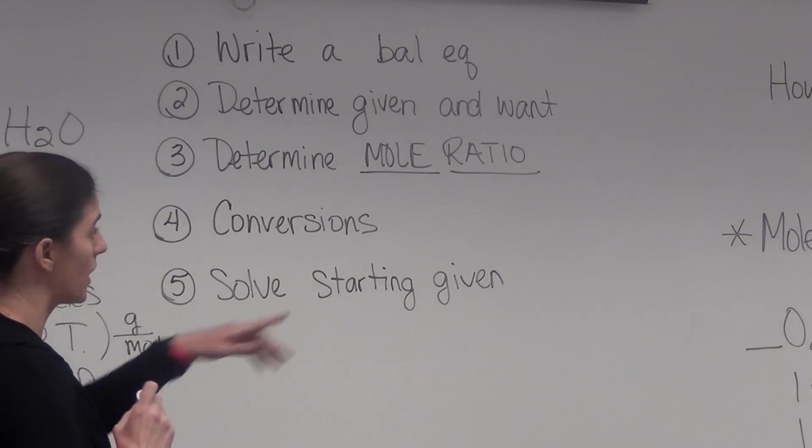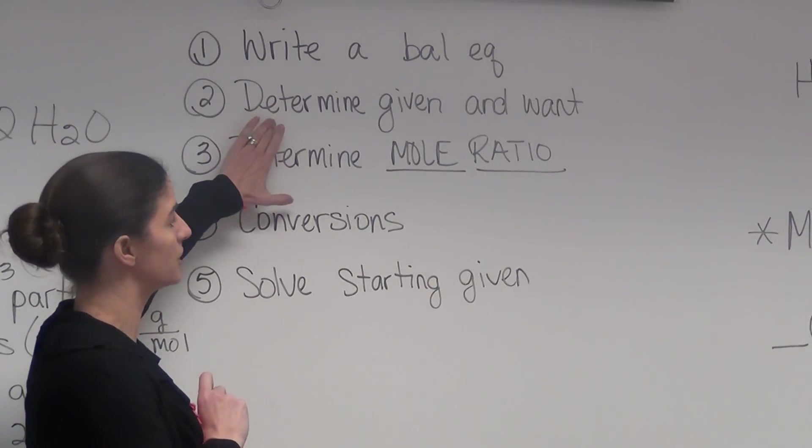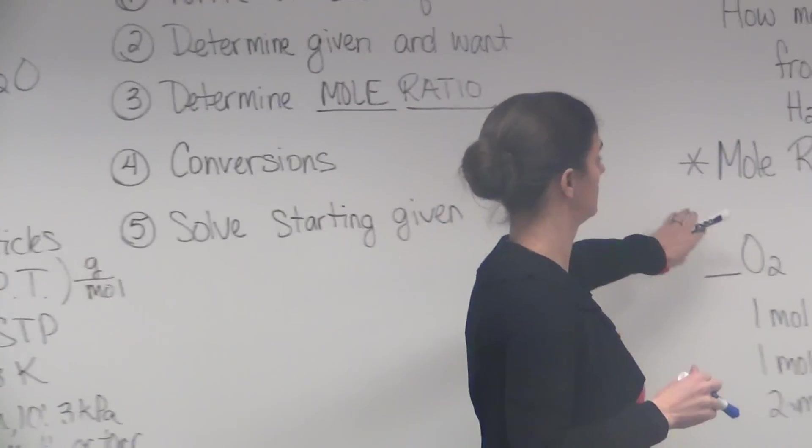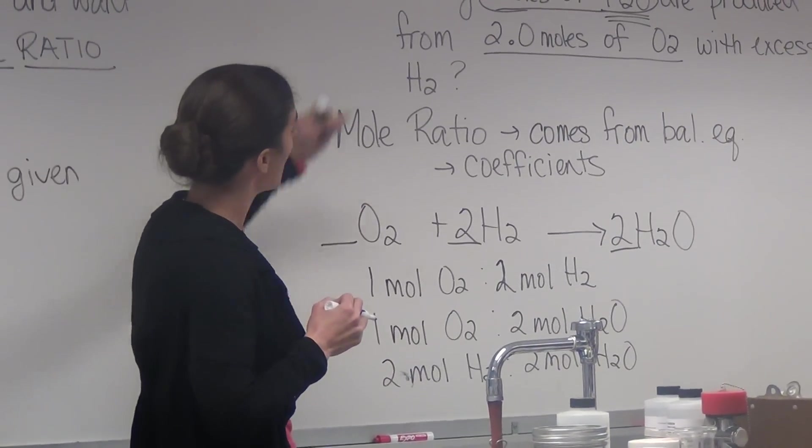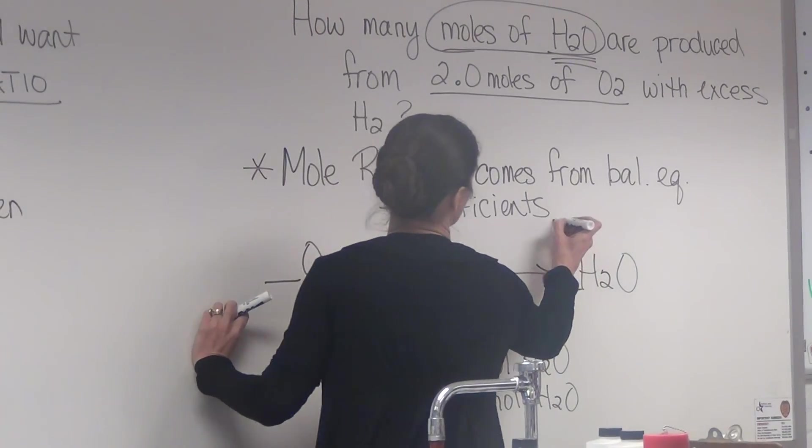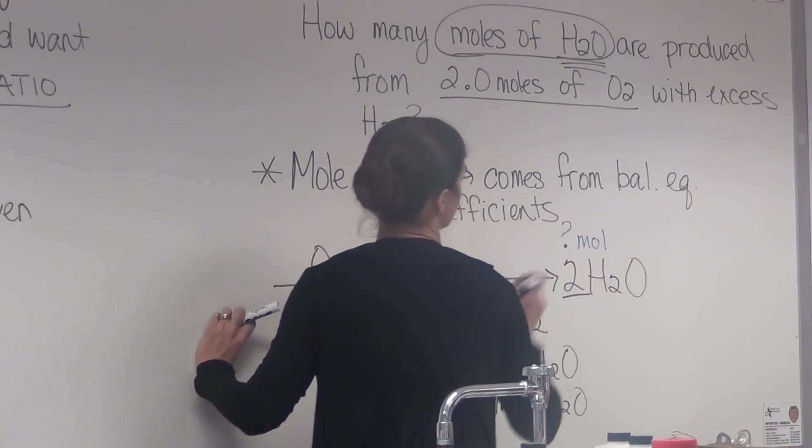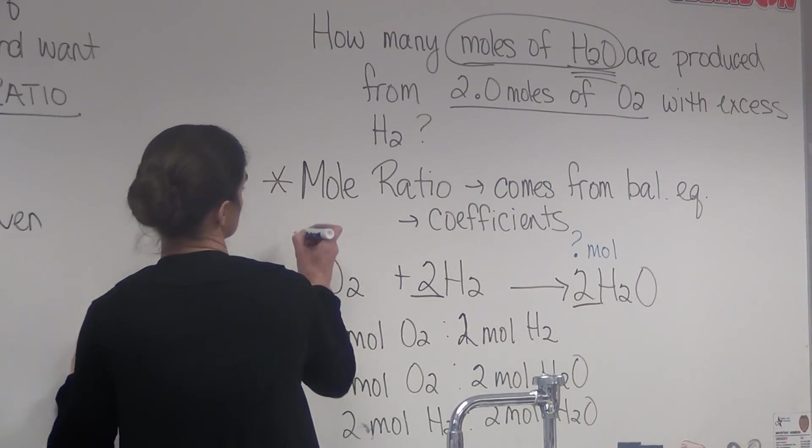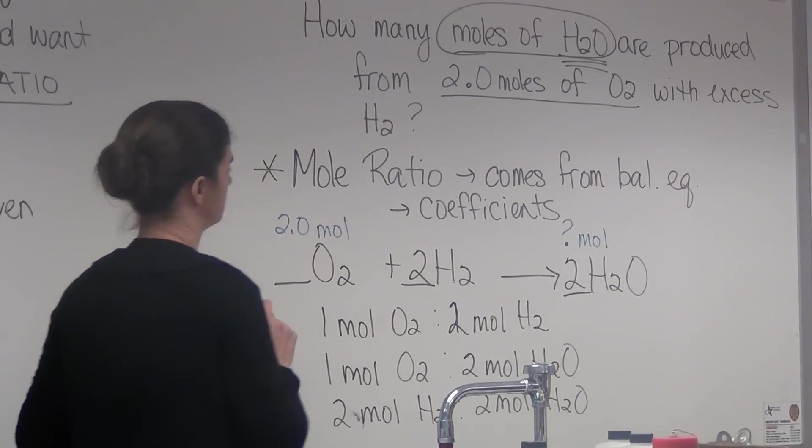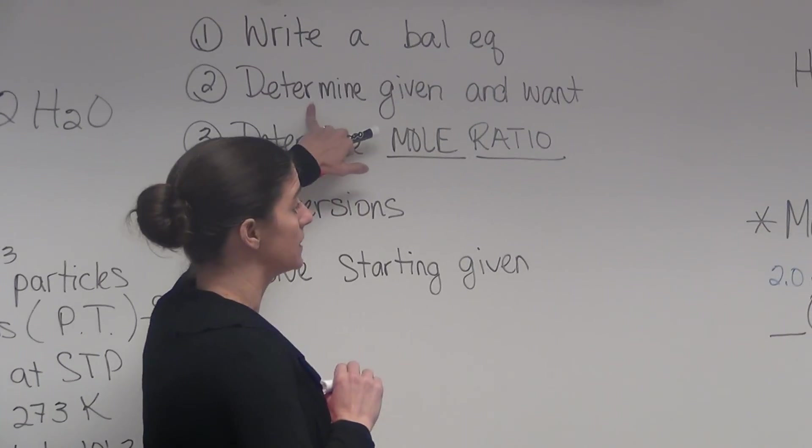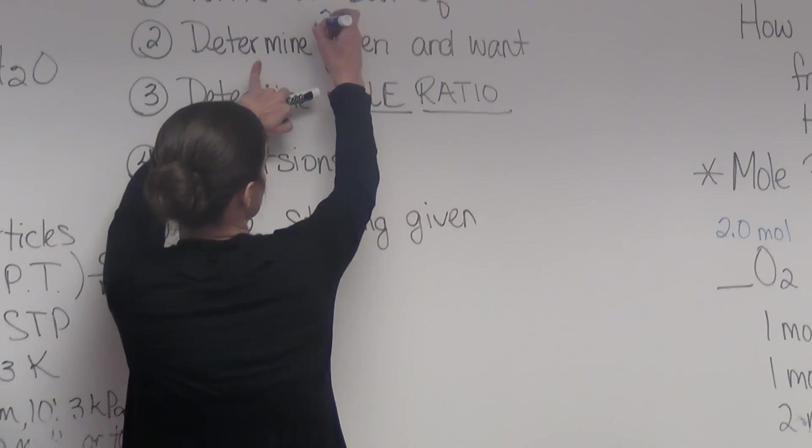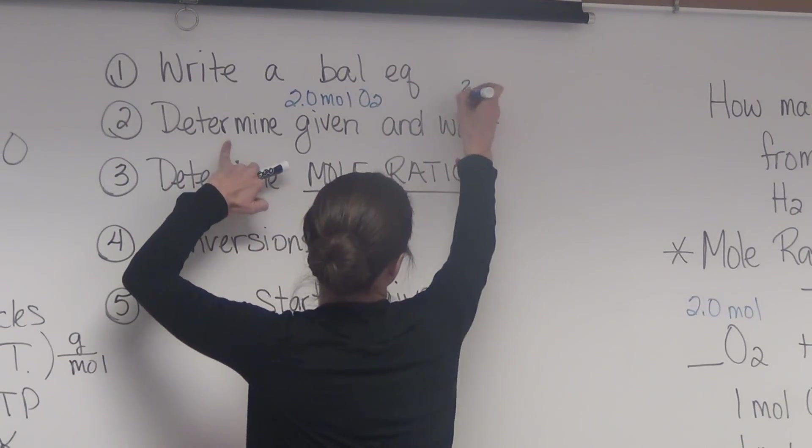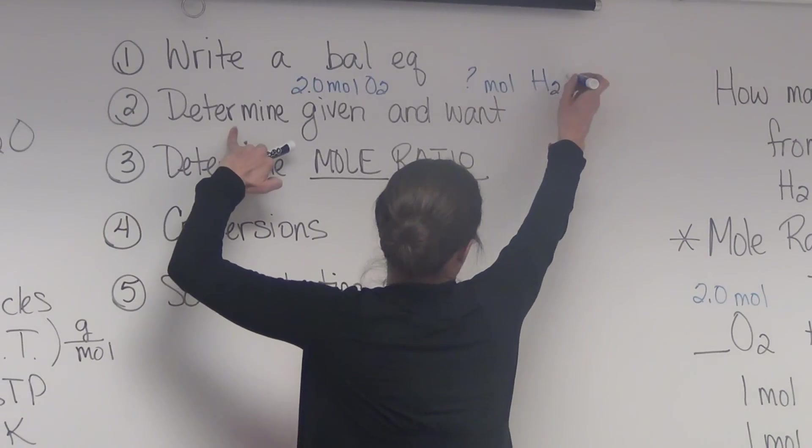So we have our balanced equation already over here. We're going to determine our given and our want. What I like to do is write it right above the balanced equation. So in this case, it says, how many moles of water? So I'm going to put a question mark and I'm going to put moles above the water. Given to me in the problem, 2.0 moles of oxygen. So I'm going to put 2.0 moles. So that's my given and my want. We know 2.0 moles of oxygen. What we're trying to find is moles of water.